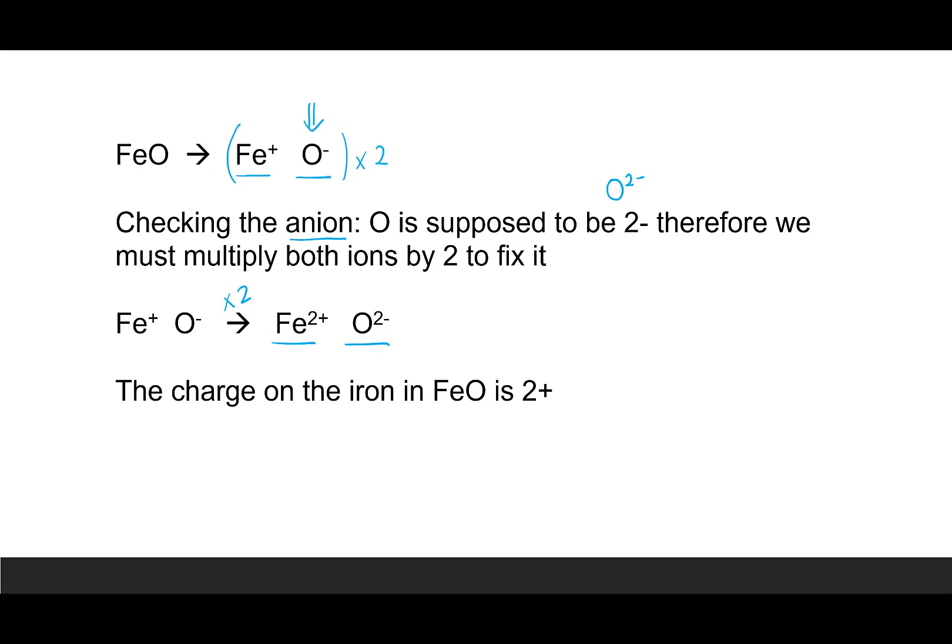You might be wondering why when I do the reverse crossover method do I need to check my work. Remember, ionic compounds are always shown in their simplest ratio. If we think about how this formula was written, I had Fe2+ and O2-. Fe2O2 needed to be simplified to FeO. To make this simplification, I divided by 2, so it makes sense that we have to reverse that process when we do the reverse crossover method.